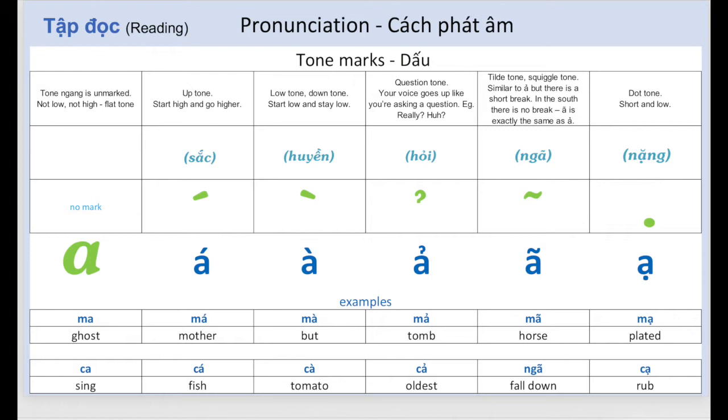In this presentation, we will learn tone marks. Vietnamese is a tonal language. There are six tones and each tone is marked with a symbol. We will call them tone marks. We will go over each of them now.